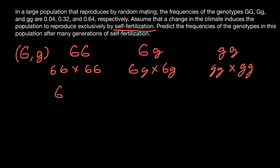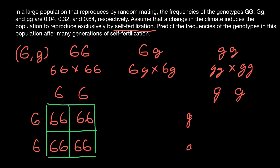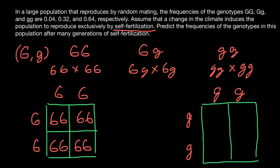For example, if one parent is homozygous dominant and the other is also homozygous dominant — or it can be the same parent, since plants can self-fertilize and self-pollinate — all the progeny are going to be of one genotype and one phenotype: homozygous dominant. The same picture applies to homozygous recessive: all progeny will be homozygous recessive, just like the parents.